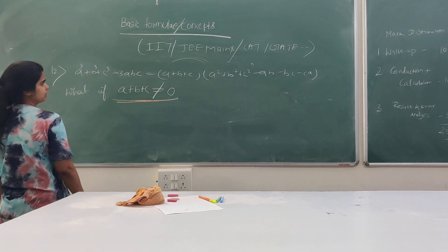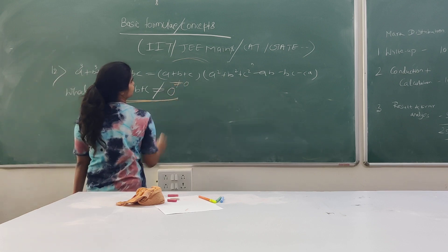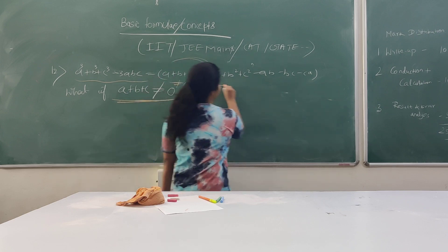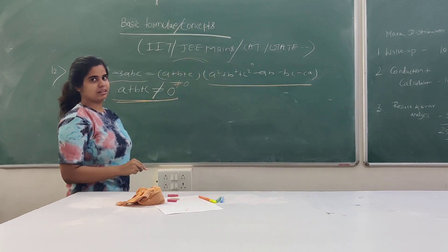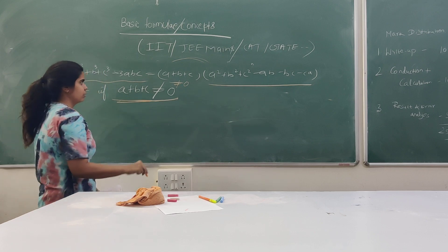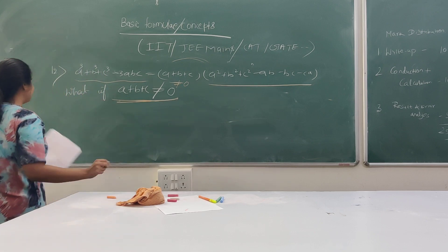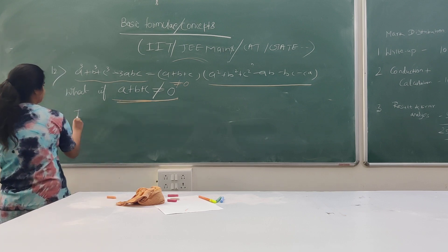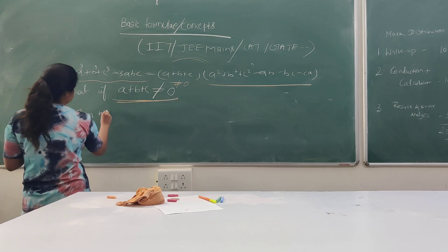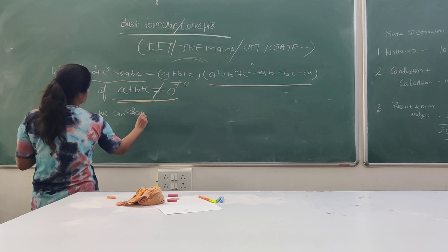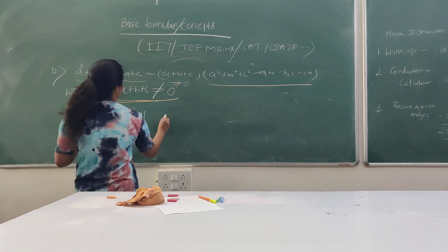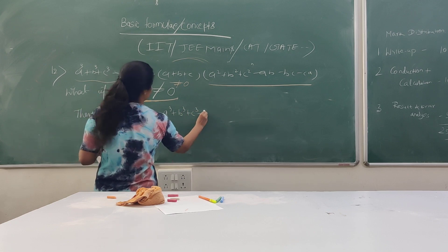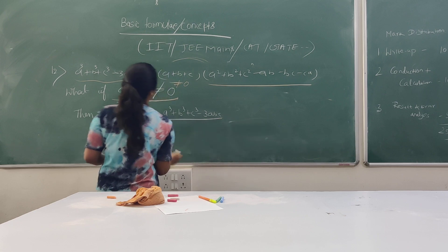So what can we say about this? If a plus b plus c is not equal to zero, what will happen to this equation? Can we factor out something — can we factor out with this C? In that case, again we can say that a cube plus b cube plus c cube minus 3abc is divided by a plus b plus c.